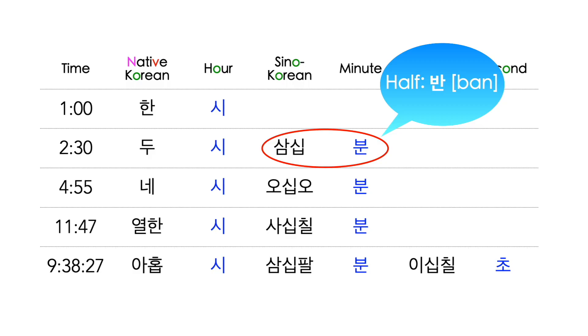A half — 반 — can also be used instead of 30 minutes, 삼십 분.